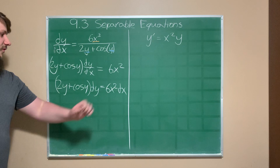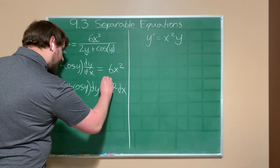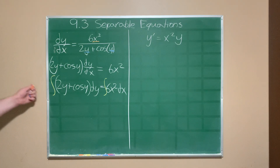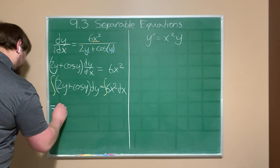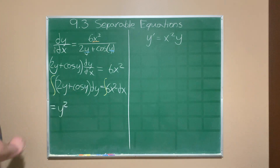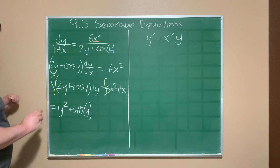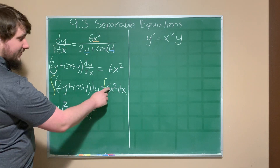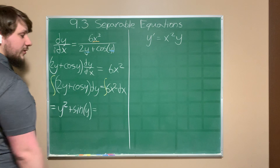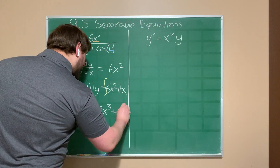Now algebraically I've moved all the y's and dy's to one side and all the x's and dx to the other, so I can take an antiderivative of both sides. The antiderivative of 2y with respect to y gives y², and the antiderivative of cos(y) is sin(y). On the right, the antiderivative of 6x² is 6x³/3, which equals 2x³, plus a constant of integration.